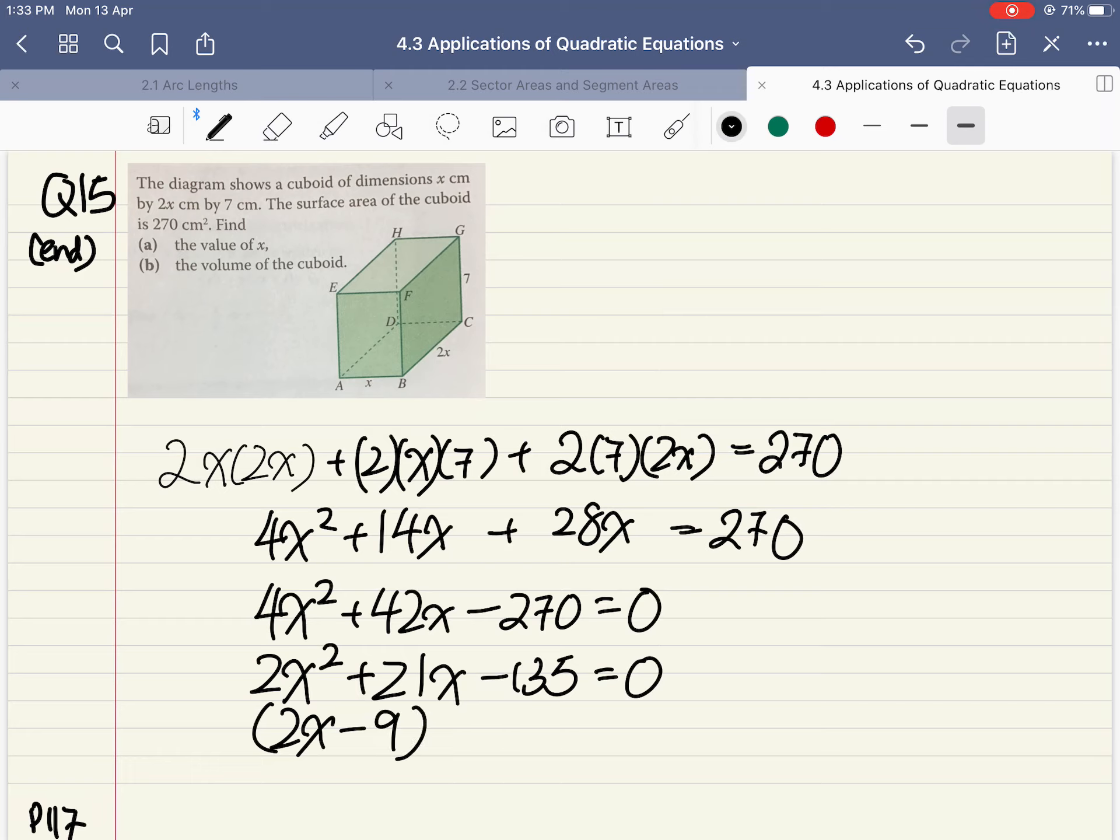The factorization will give me 2x - 9 times x + 15 equals zero. Hence x equals 4 and a half or x equals negative 15. Once again, length cannot be negative, so we'll reject the negative 15. Therefore, x is 4 and a half cm.